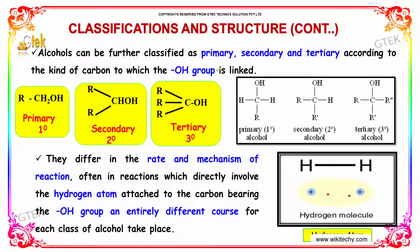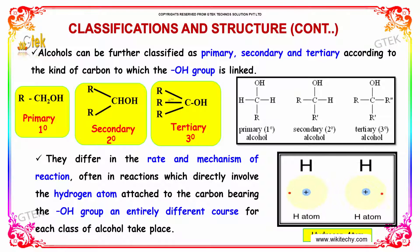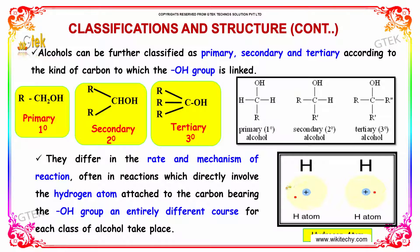Alcohols can further be classified as primary, secondary, and tertiary according to the kind of carbon to which the OH group is linked. A primary carbon has the OH attached to a single carbon. Secondary has two methyl groups attached to the carbon atom, and tertiary has three methyl groups attached. They differ in the rate and mechanism of reaction, especially in reactions directly involving the hydrogen atom attached to the carbon bearing the OH group.